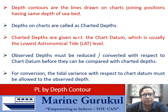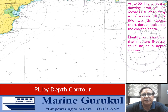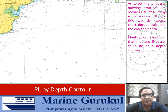Let's look at it through an example. At 1400 hours, a vessel drawing seven meters records an under-keel clearance (UKC) of 4.5 meters by echo sounder. If the tide was two meters above chart datum, calculate the charted depth at that particular time and identify on the chart if the vessel could be on a depth contour.